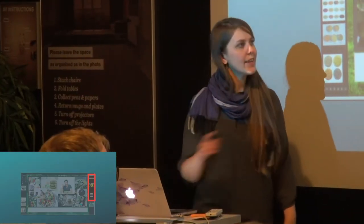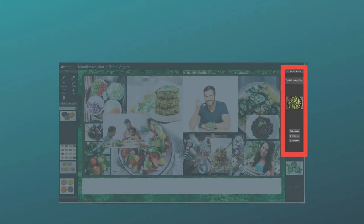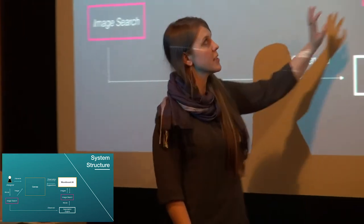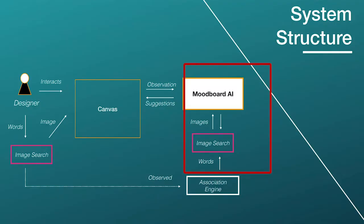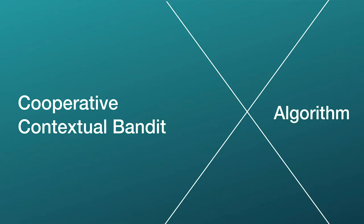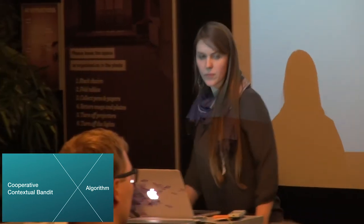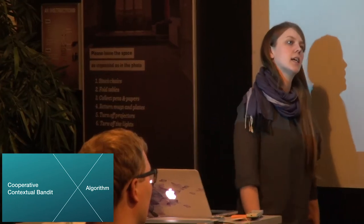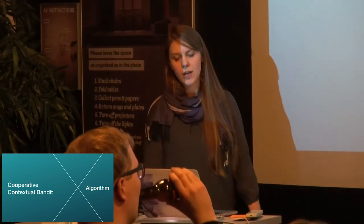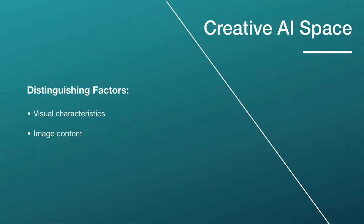The interesting question is how the right side actually works. How does the AI come to suggest an image? The algorithm behind it is a cooperative contextual bandit — a family of systems usually used for recommendation engines like Netflix and Yahoo. In order to design such an algorithm, we first have to understand what is actually the creative space an AI should work in to make useful and suitable suggestions.